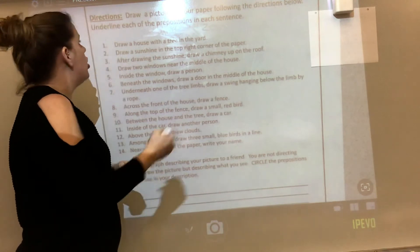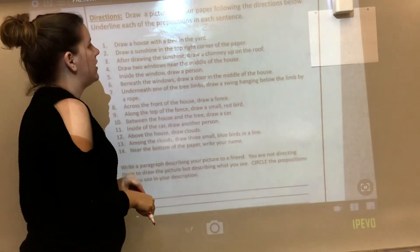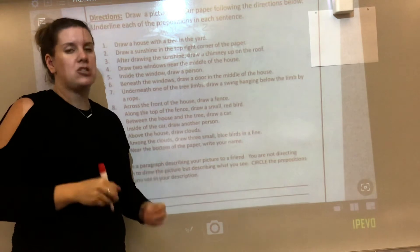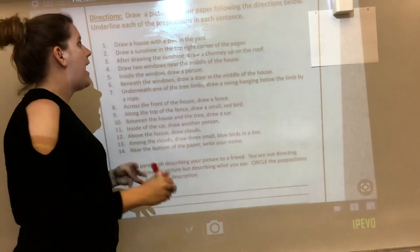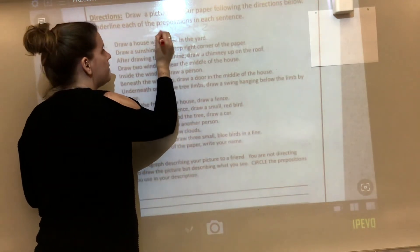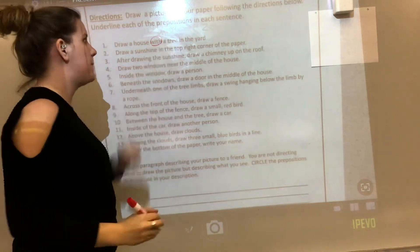So the first sentence says, draw a house with a tree in the yard. We've got to think of what the prepositions are in that sentence. I know a preposition is 'with,' and I know a preposition is 'in.'